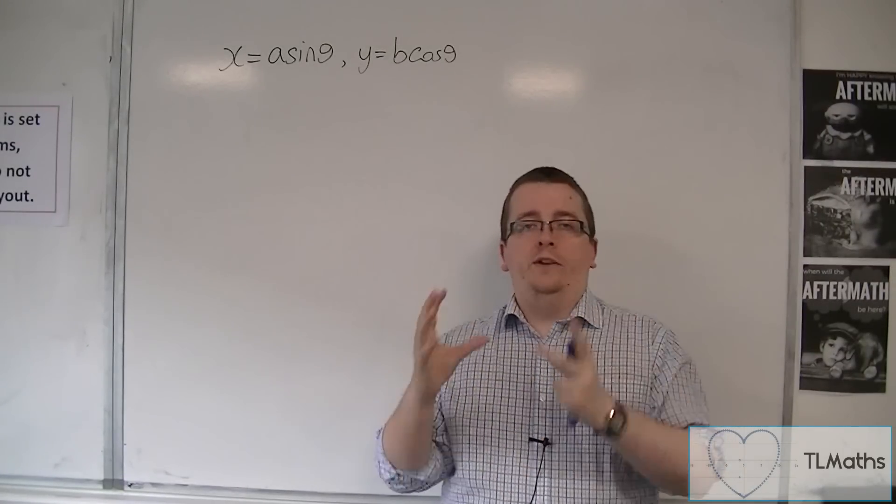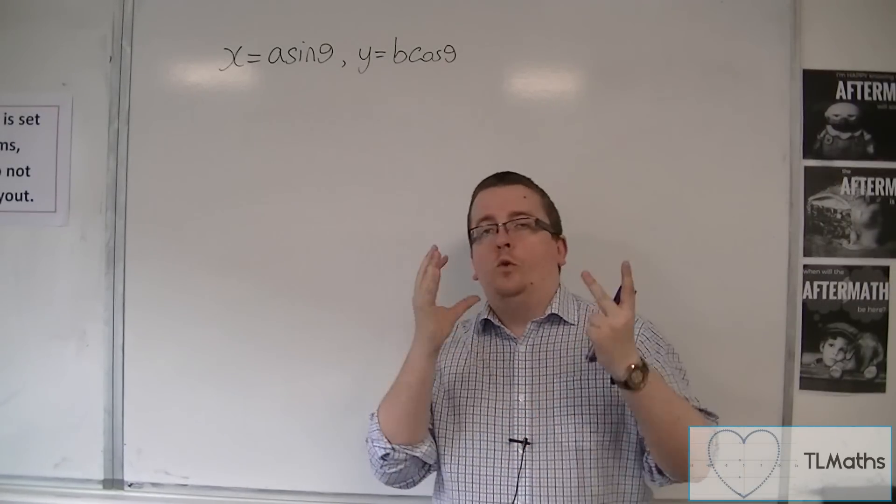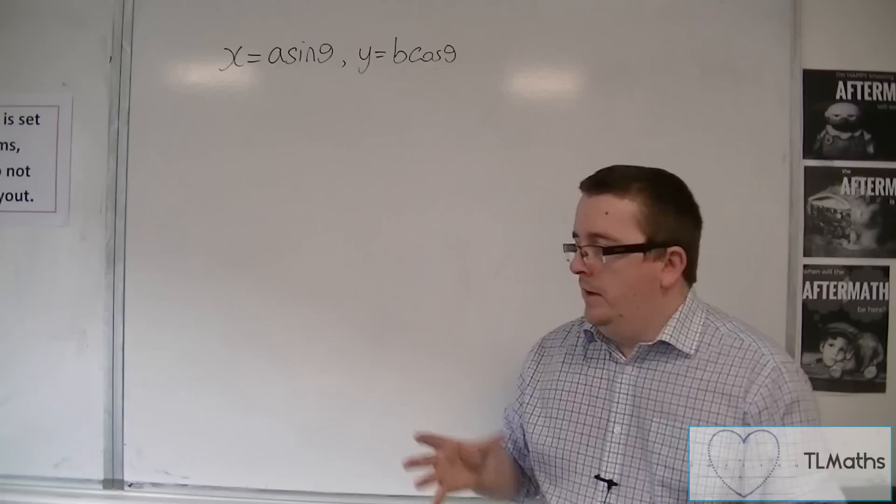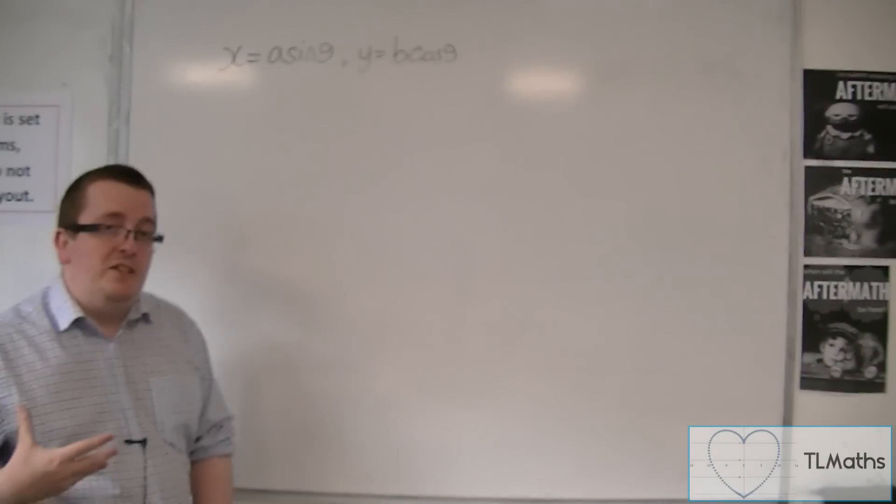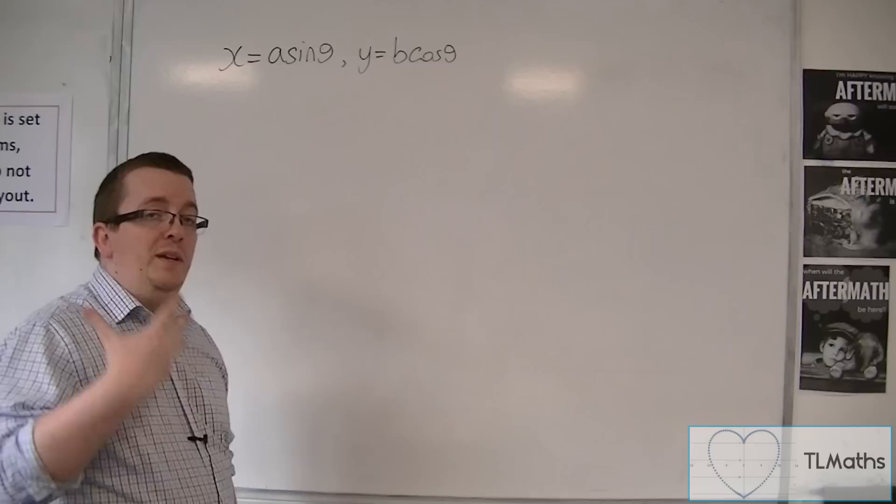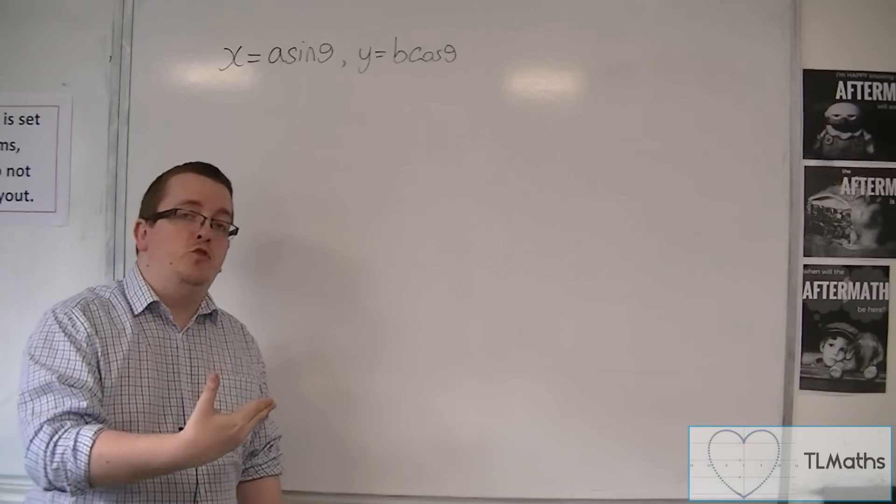I want to figure out what is the Cartesian equation and what does it look like. So first of all, what I would do is rearrange this to get sine theta equals and cosine theta equals, because then I know I can substitute them into a trig identity.